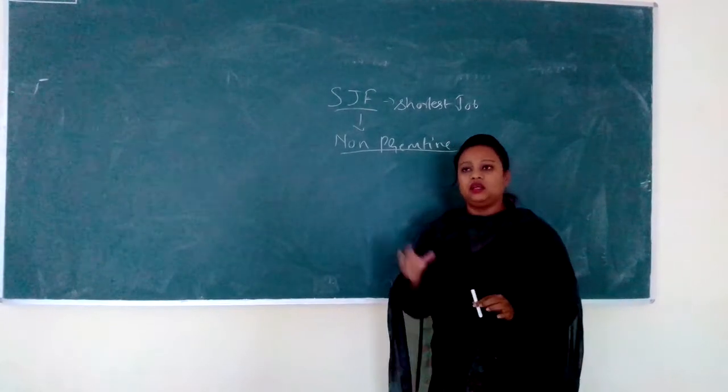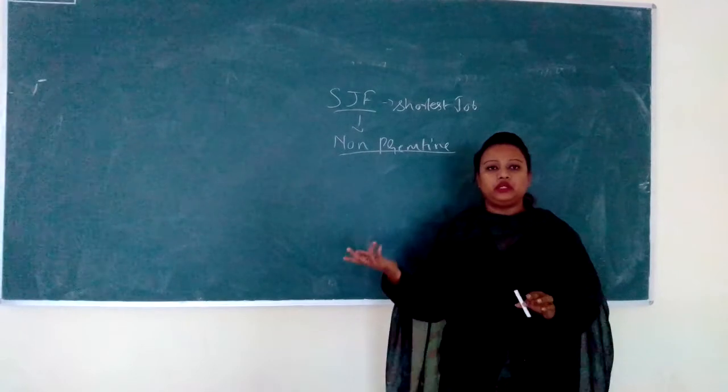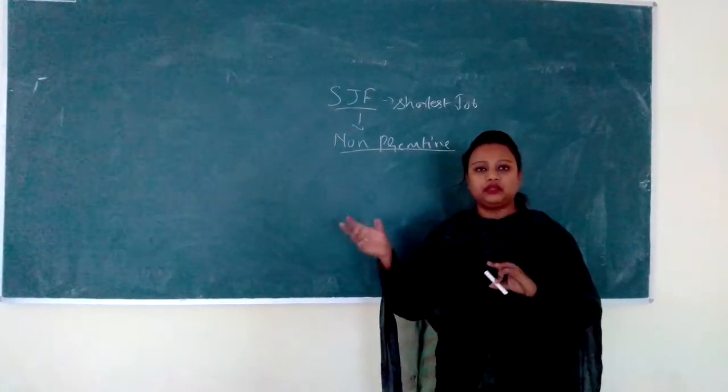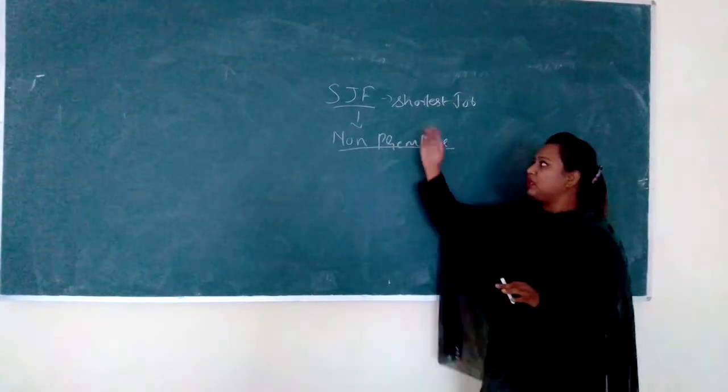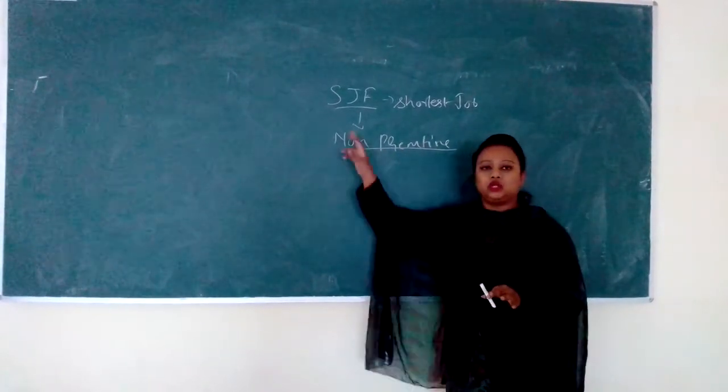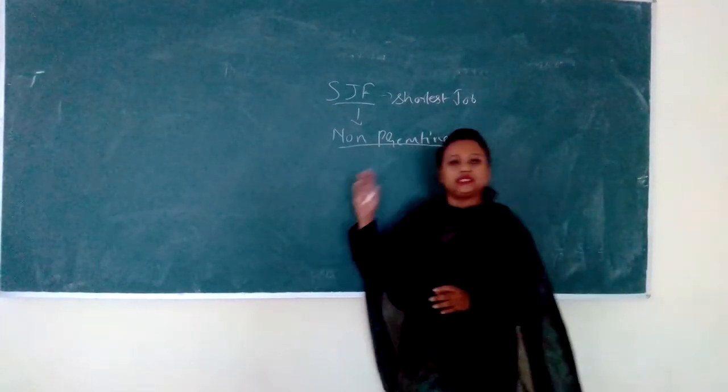But in preemptive case, whenever a process starts, the CPU will look for more priority compared to the first process and it can also execute that particular process in between. Now, here we are solving a question for shortest job first algorithm for non-preemptive version. For that, we are going to look with an example.